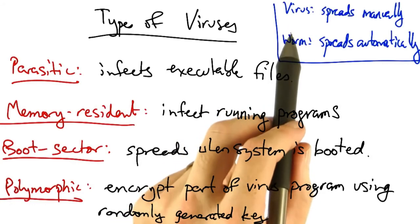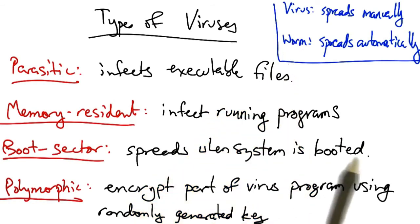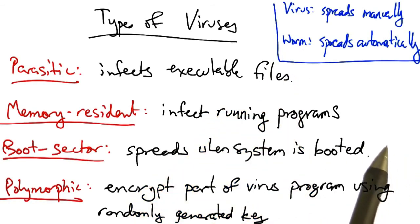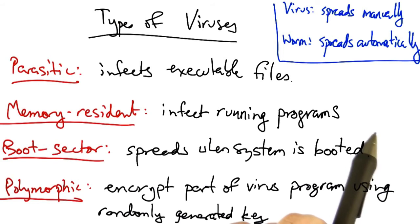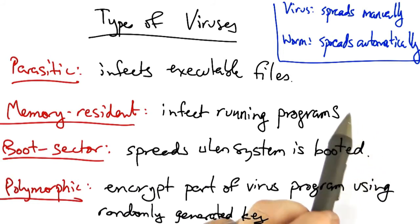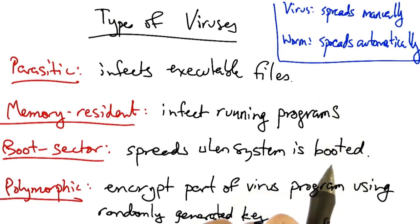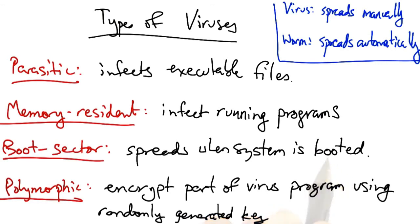One of the key differences between viruses and worms is that viruses typically spread with manual user intervention. Worms typically spread automatically by scanning for vulnerabilities and infecting vulnerable hosts when those vulnerabilities are discovered. A worm might use any of these techniques to infect a particular host before spreading further.